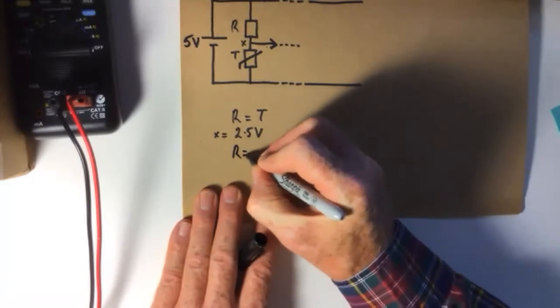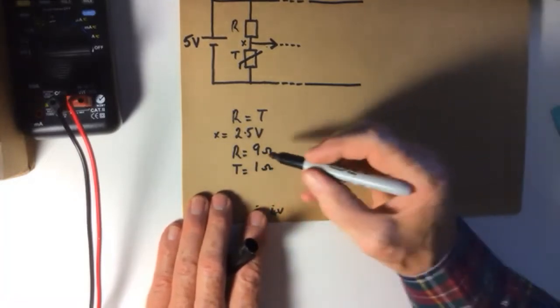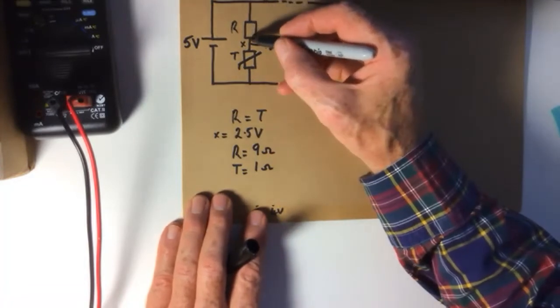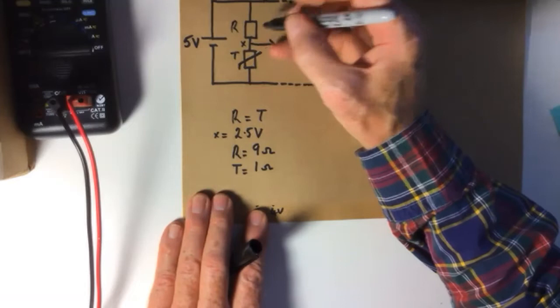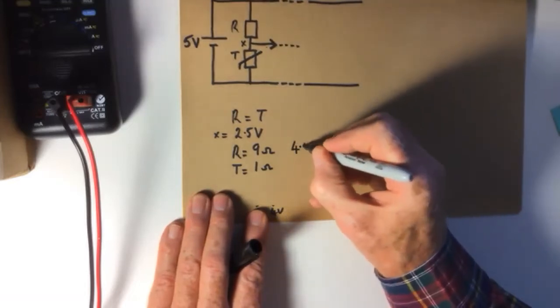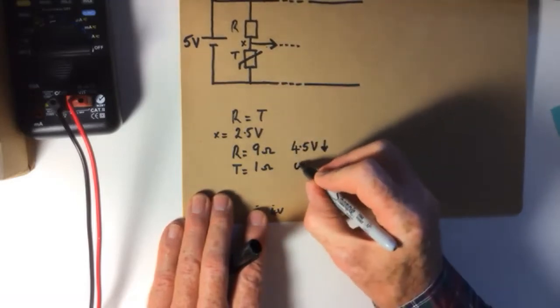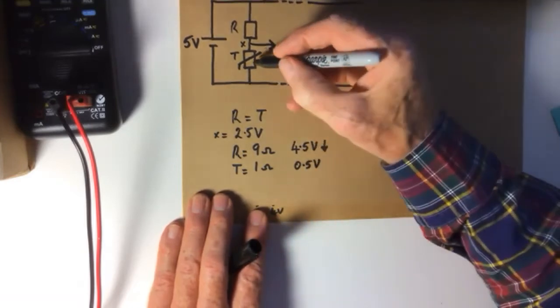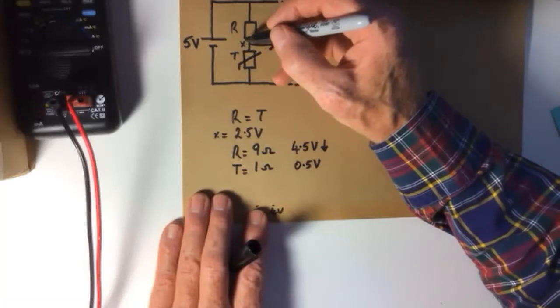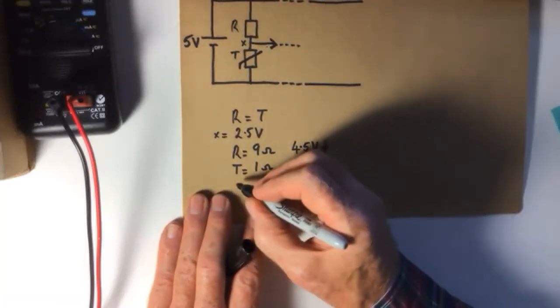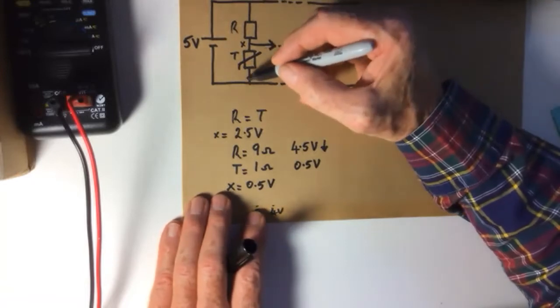What if R was equal to 9 ohms, and T was equal to 1 ohm? Well, nine tenths of the voltage is dropped here, and one tenth of the voltage is dropped here. So what happens is, the volt drop across here is 4.5 volts. That's the volt drop. Which only leaves, across this one, 0.5 volts. Across here is 0.5. So what happens is, in this situation, the voltage at X is now 0.5. The voltage at X equals 0.5 volts, because it's a series circuit.